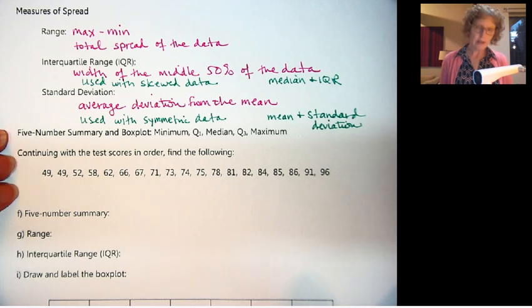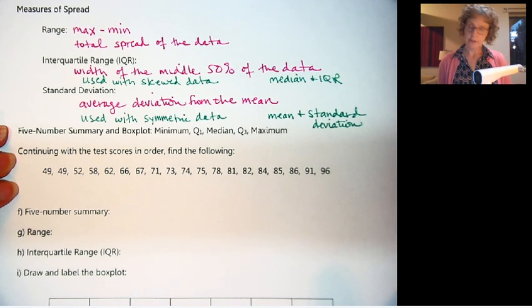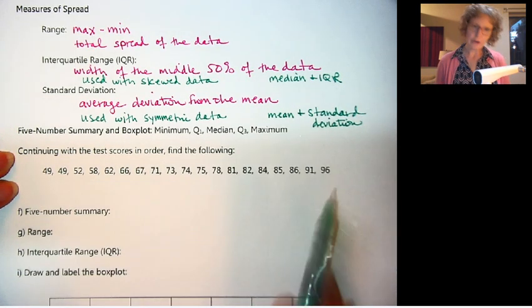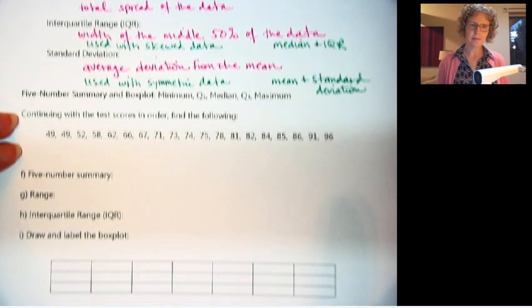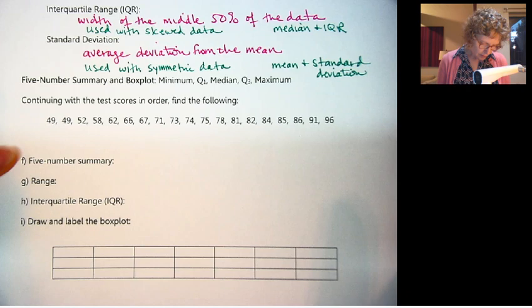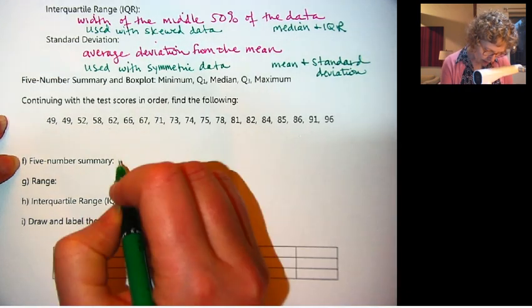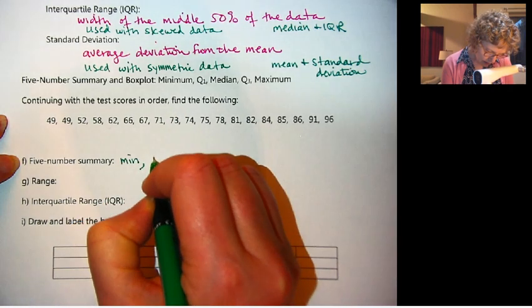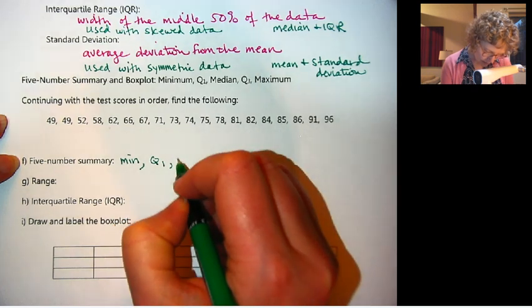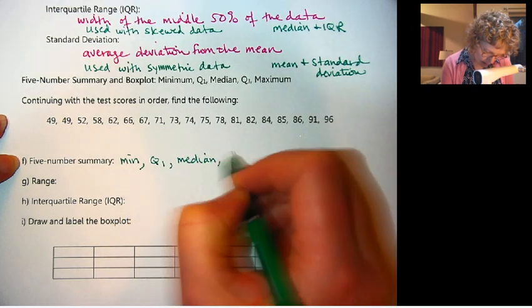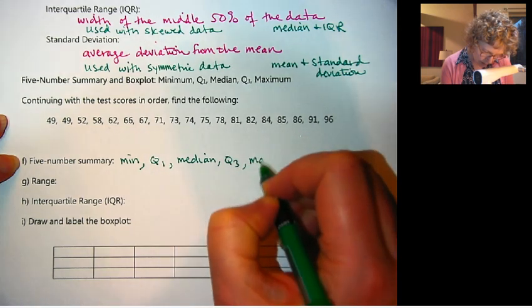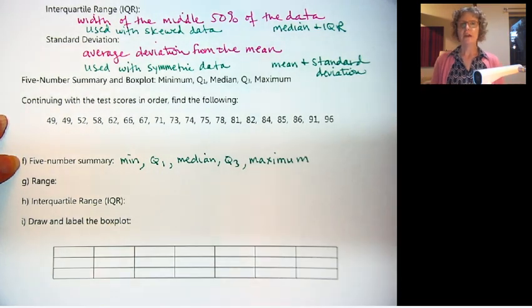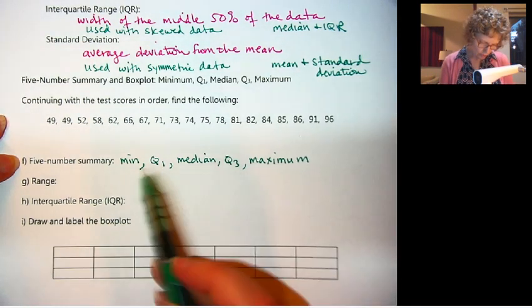Now let's go ahead and calculate this example. We're continuing with the test scores. I've got them in order this time, since we've already put them in order. We're going to find our five-number summary. That is the minimum, Q1, the median, Q3, and the maximum. Those are five numbers. Once you find those five values, that is called your five-number summary.